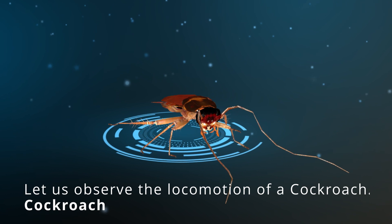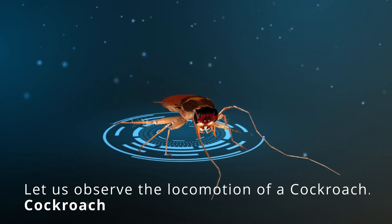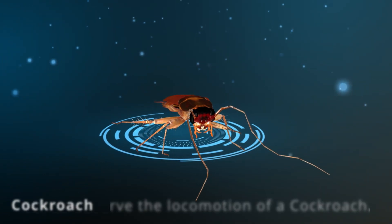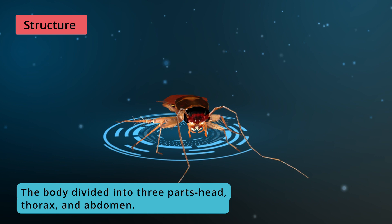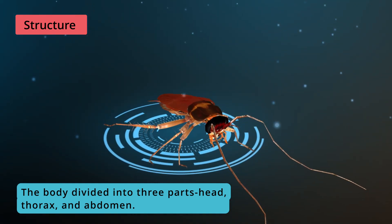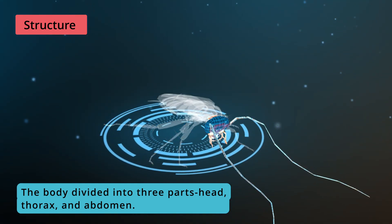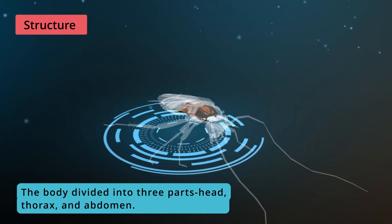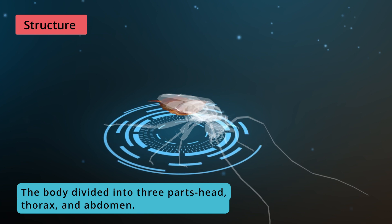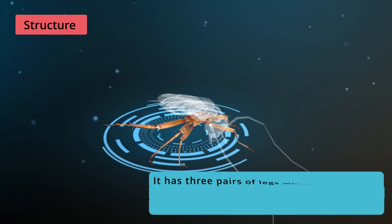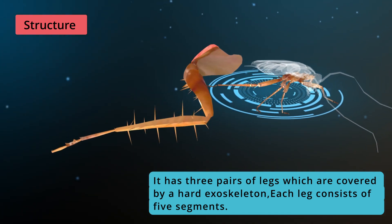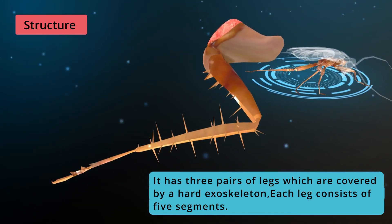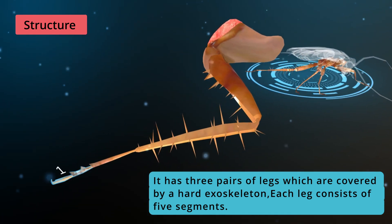Let us observe the locomotion of a cockroach. Body parts: the body is divided into three parts — head, thorax, and abdomen. It has three pairs of legs that are covered by a hard exoskeleton. Each leg consists of five segments.